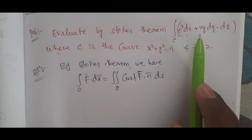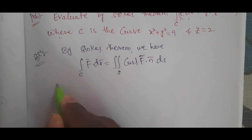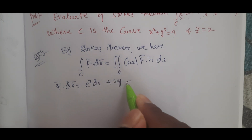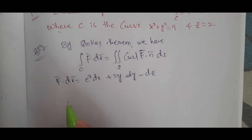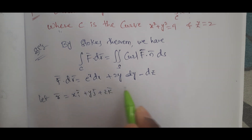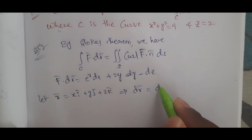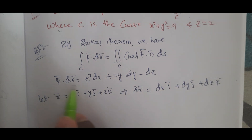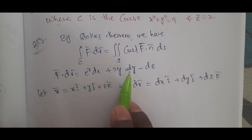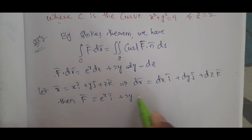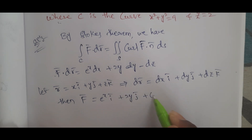From F·dr = e^x dx + 2y dy − dz, and since dr = dx i + dy j + dz k, we identify F = e^x i + 2y j − k.